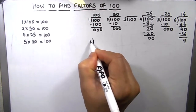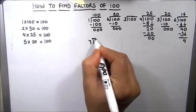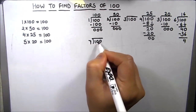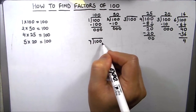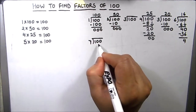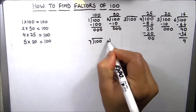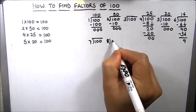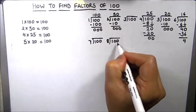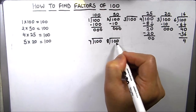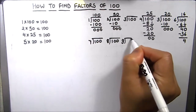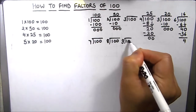Next we will divide 100 by number 7. 7 is also not a factor of 100, as 100 is not fully divisible by 7. Next we will divide by 8 — 8 is also not a factor of 100. Next is 9, which is also not a factor of 100.